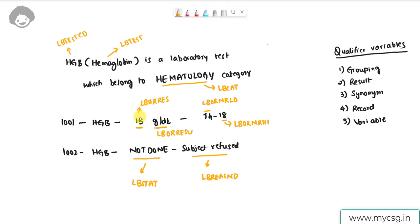Now we will link the roles or qualifier categories for each of these variables. HGB is stored in LBTESTCD, which is the topic variable. The full form 'hemoglobin' is stored in LBTEST, and we have a qualifier called synonym qualifier. LBTEST is qualifying or representing the same thing present in LBTESTCD but in a different form. So LBTEST is a synonym qualifier — a simple and easy-to-remember example.